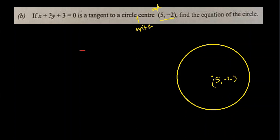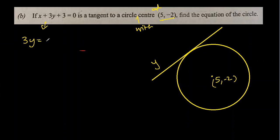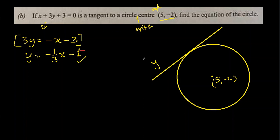Let's draw the tangent. The equation of the tangent is x plus 3y plus 3 equals 0. Rearranging: 3y equal to minus x minus 3, then y equal to minus one-third x minus 1. Dividing the whole equation by 3 gives us y equal to minus one-third x minus 1.